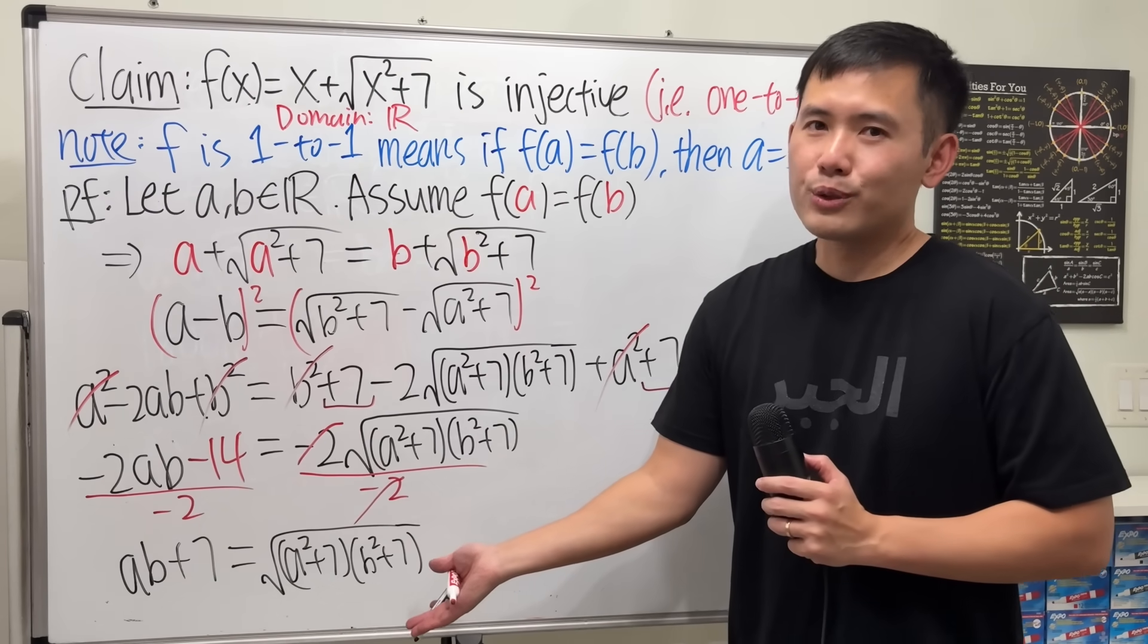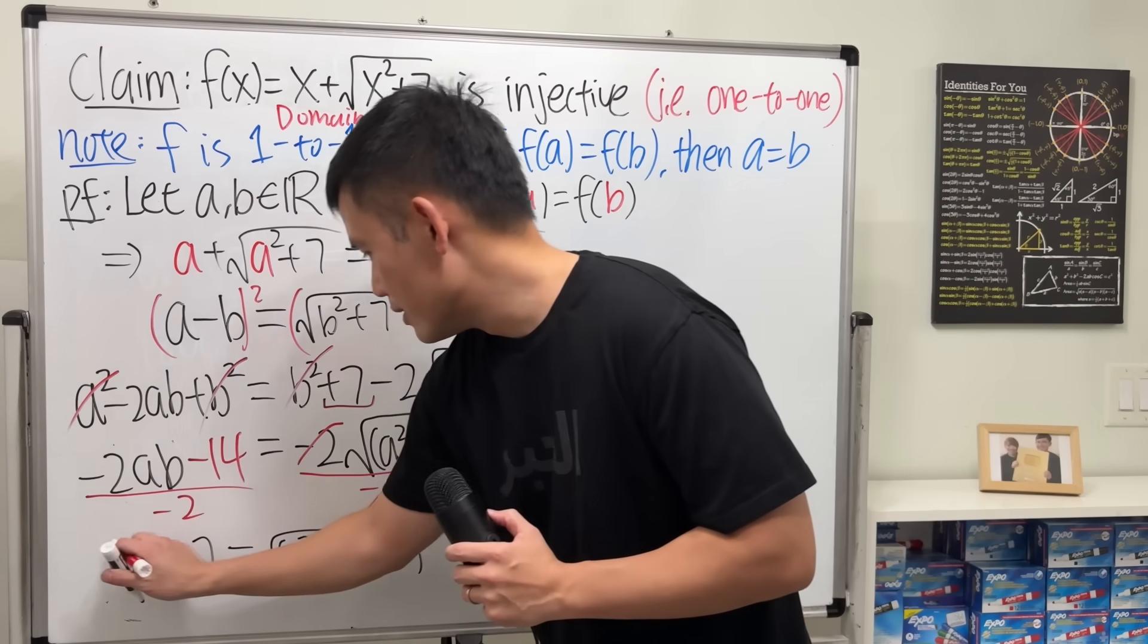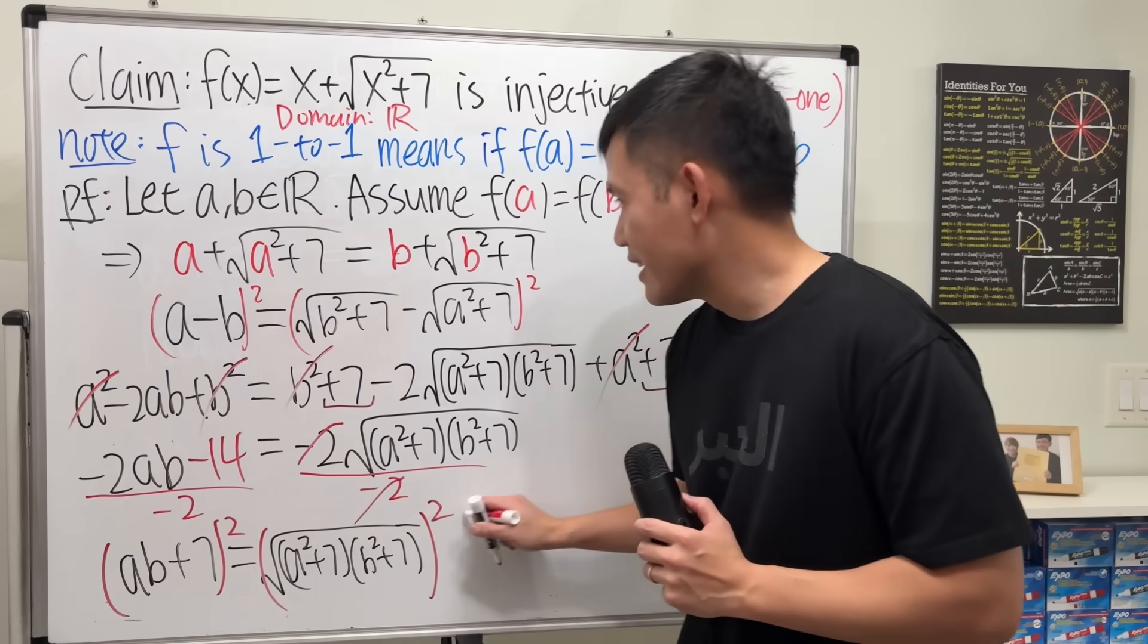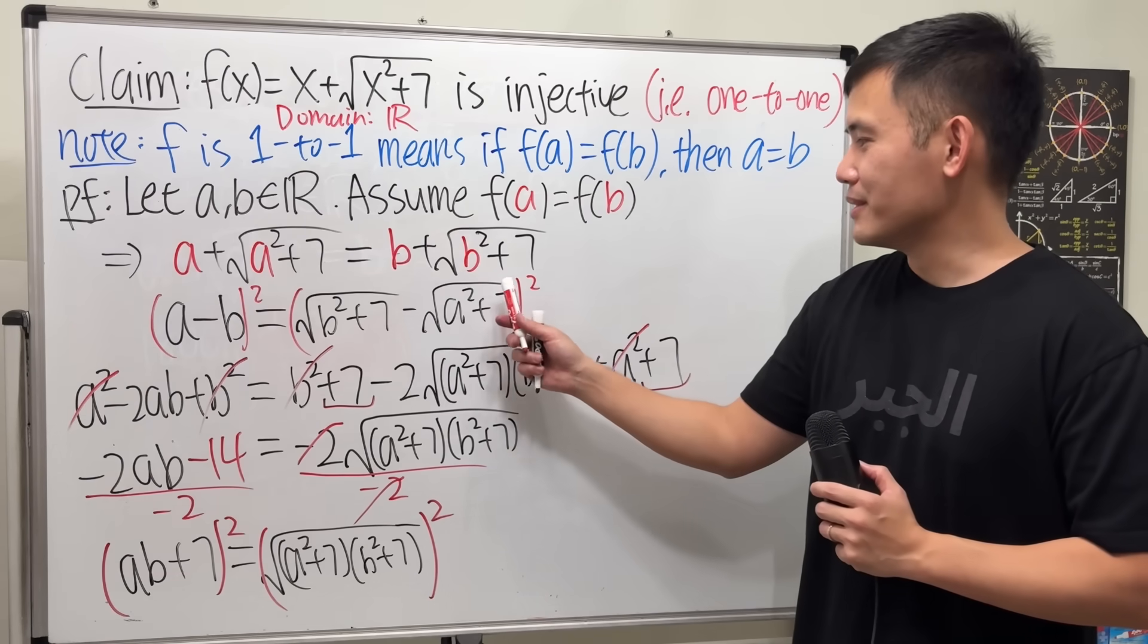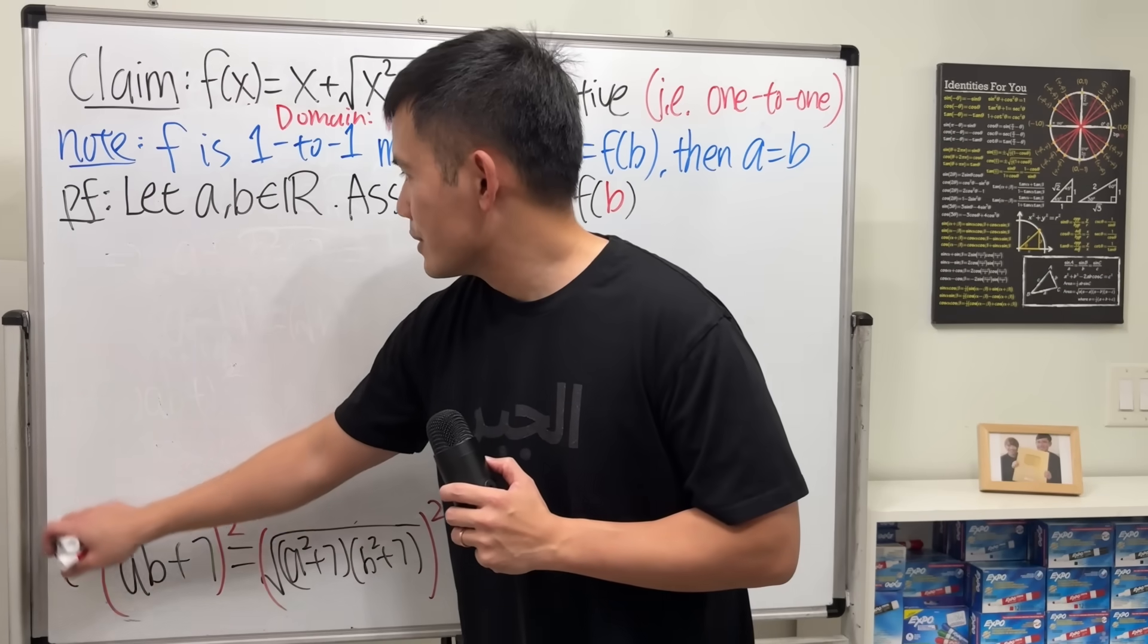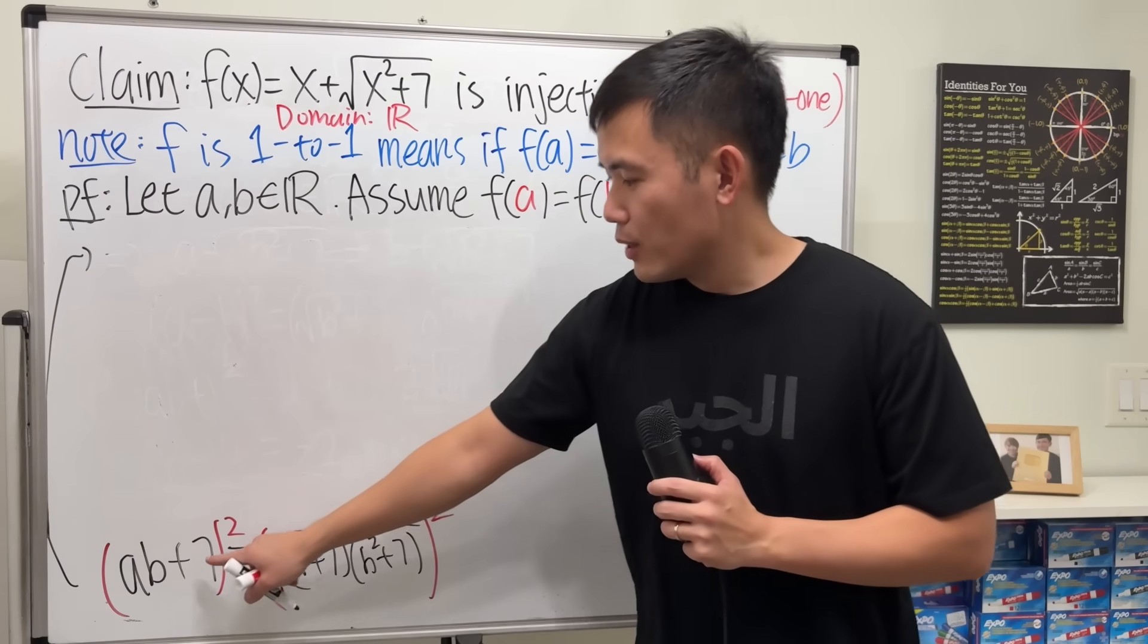Now, it looks like we have no choice but to square both sides again. So we will do that. Furthermore, it looks like I have no choice but raise the board, so I will do that too. So, just kind of go back here.